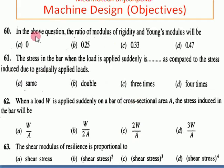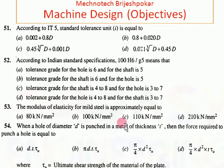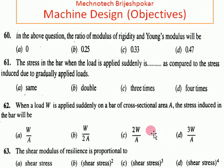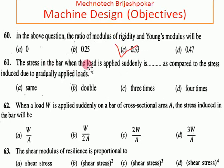In the above question, the ratio of modulus of rigidity to Young's modulus — considering the same relationship between lateral and linear strain — the answer for question 60 is C, which is 0.33.